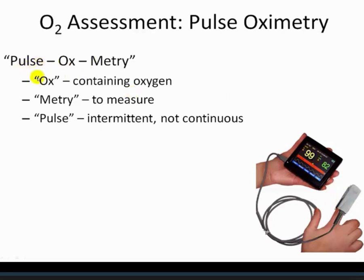With pulse oximetry, the 'ox' refers to oxygen — the measurement of oxygen — and 'pulse' means it's intermittent, picking up the intermittent signal rather than the continuous signal. Essentially, pulse oximetry is measuring the intermittent measure of oxygen and displaying that in terms of hemoglobin saturation. Every time we talk about pulse ox, the number generated is telling us the hemoglobin saturation value in that particular patient.